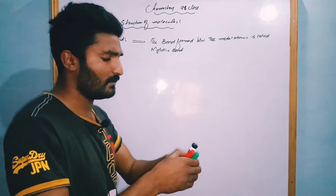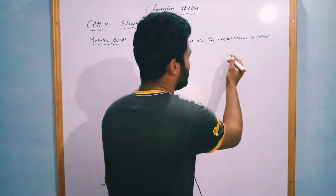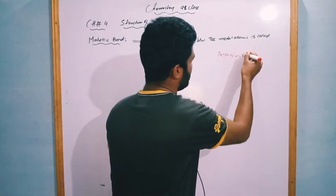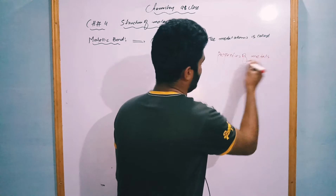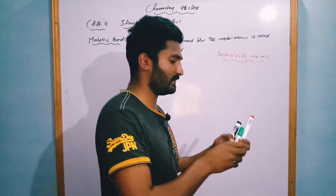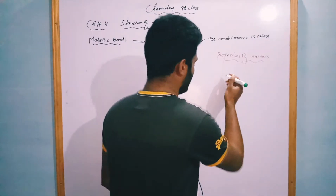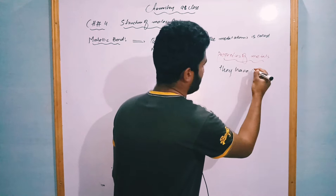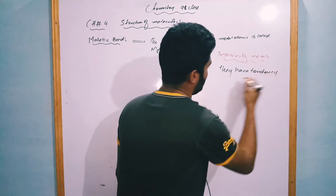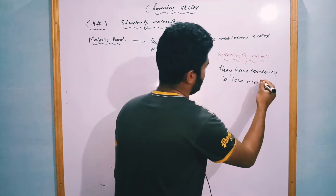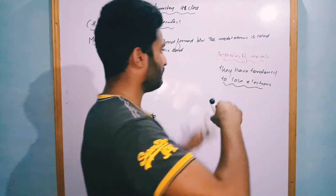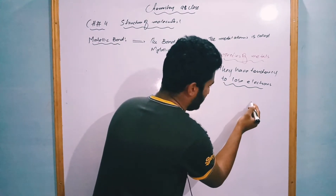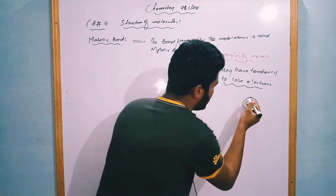When we talk about metallic bond, we come to a point about the properties of metal atoms. There are so many properties, but the specific property is that metal atoms have a tendency to lose electrons. They have a tendency to lose electrons, and there are certain reasons behind this.